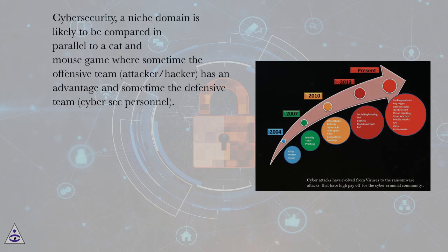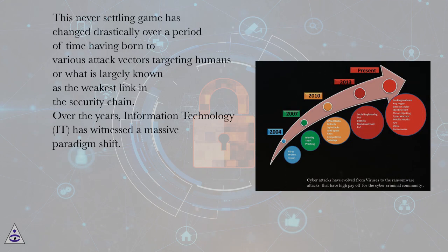Cybersecurity, a niche domain, is likely to be compared in parallel to a cat and mouse game where sometimes the offensive team — attacker or hacker — has an advantage, and sometimes the defensive team, cyber security personnel. This never-settling game has changed drastically over time, having given rise to various attack vectors targeting humans, largely known as the weakest link in the security chain.